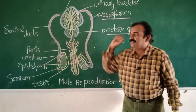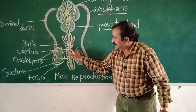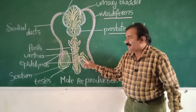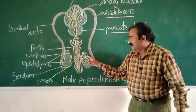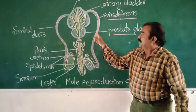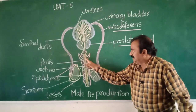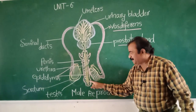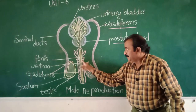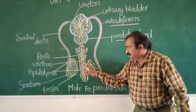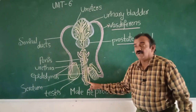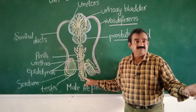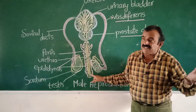Finally, through the urethra, males release sperms as well as urine. That is why it is called the urogenital duct. Sperms are produced in the testes, pass through vasa efferentia to the epididymis, then through the vas deferens to the urethra, and are released outside.